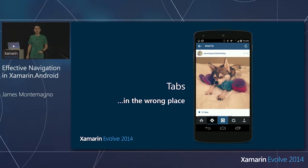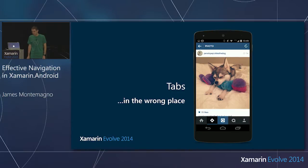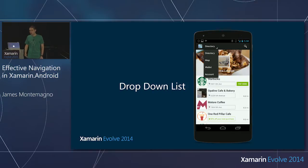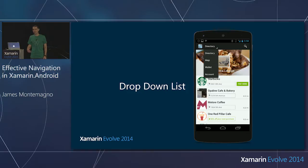Don't confuse your users. Dropdown lists are built into Android just like tabs are — these are a built-in navigation paradigm. It's just a spinner at the top. It's great for sorting information, but it's a little hidden. There's a little caret there, but when you're really navigating through your content, it's a little bit hard and tricky to see what's going on.